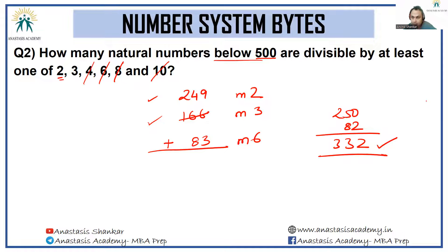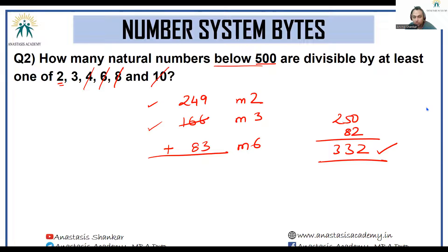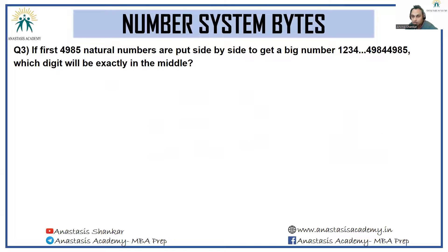There are 332 numbers below 500 divisible by 2, 3, 4, 6, 8, or 10, because once you include multiples of 2 you have also included multiples of 4, 6, 8, and 10.